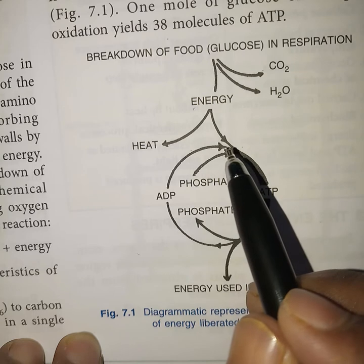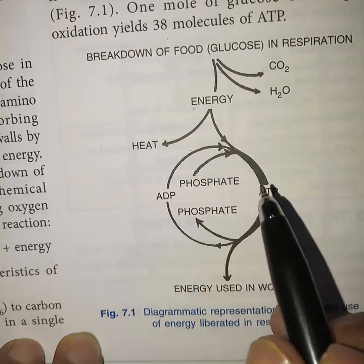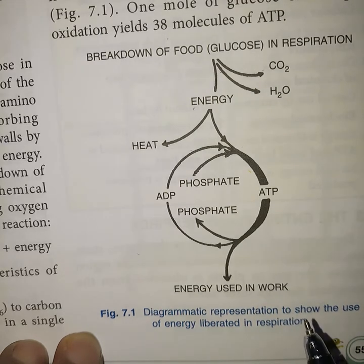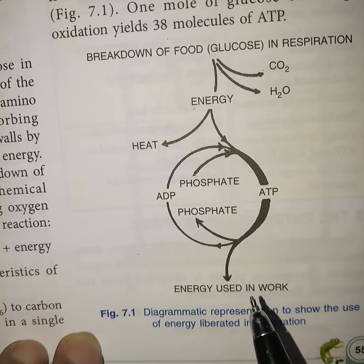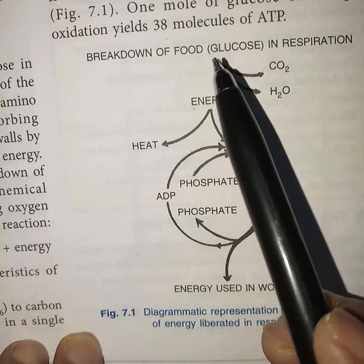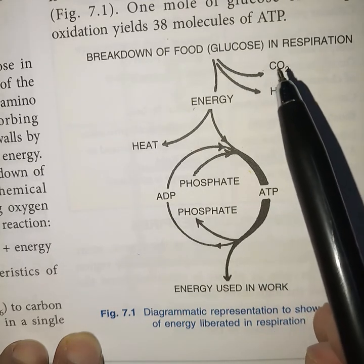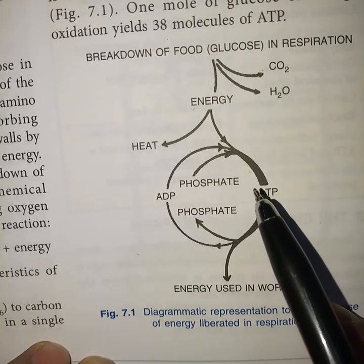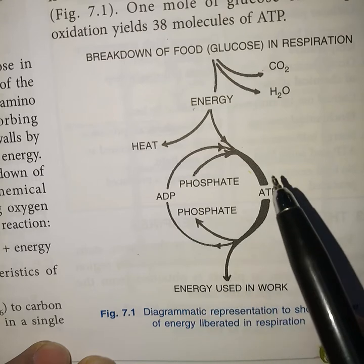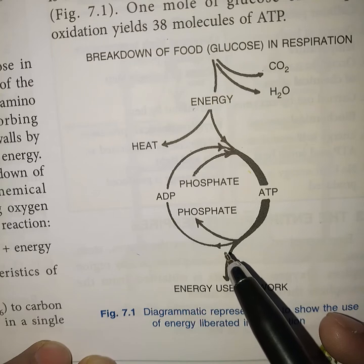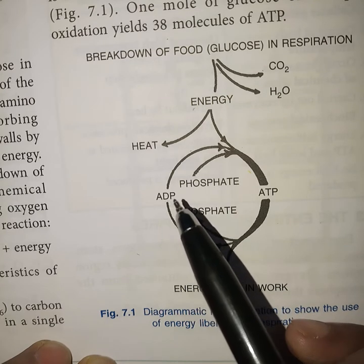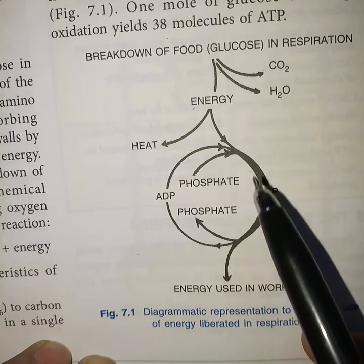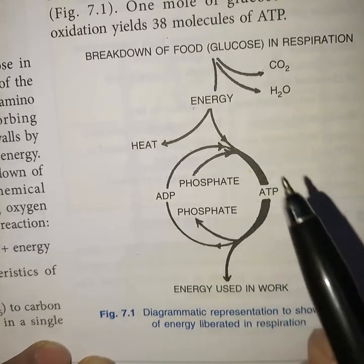ADP, by gaining one inorganic phosphate from the breakdown of glucose, again becomes ATP. The phosphate released from ATP is used to carry out various metabolic activities. So glucose undergoes oxidation to release carbon dioxide, water, and energy. This energy is released as heat as well as ATP. ATP provides energy to the body for various activities, converting into ADP, and ADP is re-converted into ATP by gaining inorganic phosphate — this cyclic process takes place in the body.